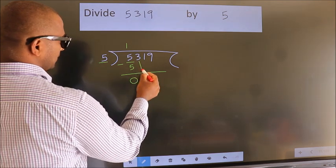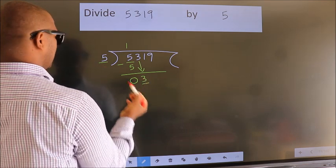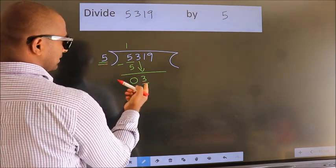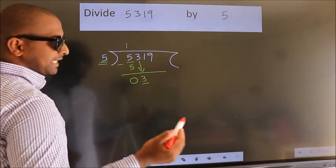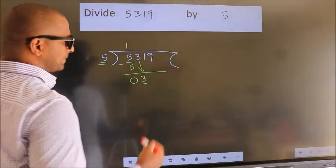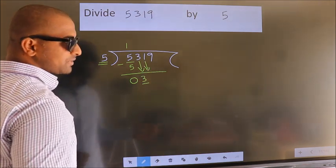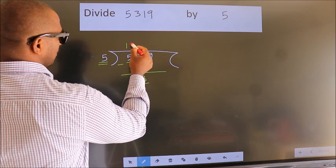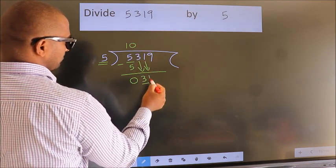After this, bring down the beside number. So, 3 down. Here we have 3. Here 5. 3 smaller than 5. So, we should bring down the second number. And the rule to bring down second number is put 0 here. Then only we can bring down this number.